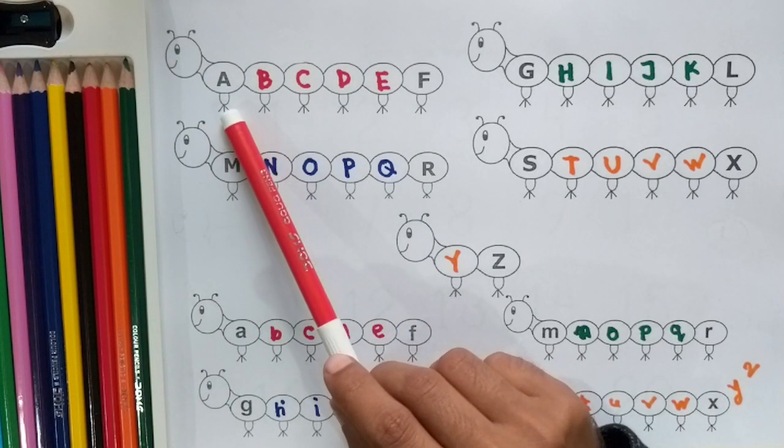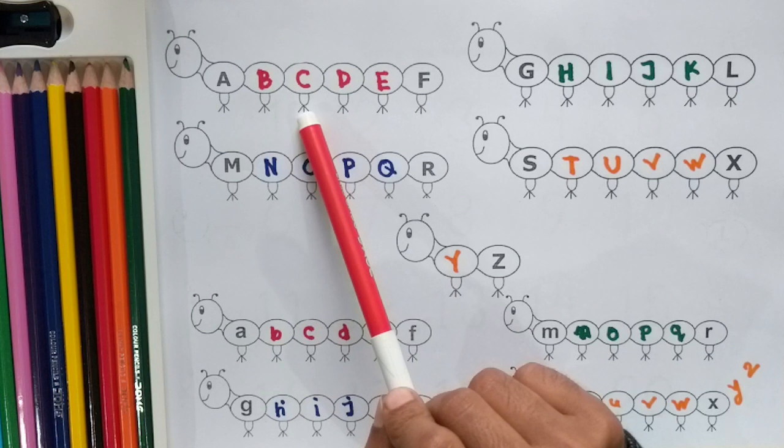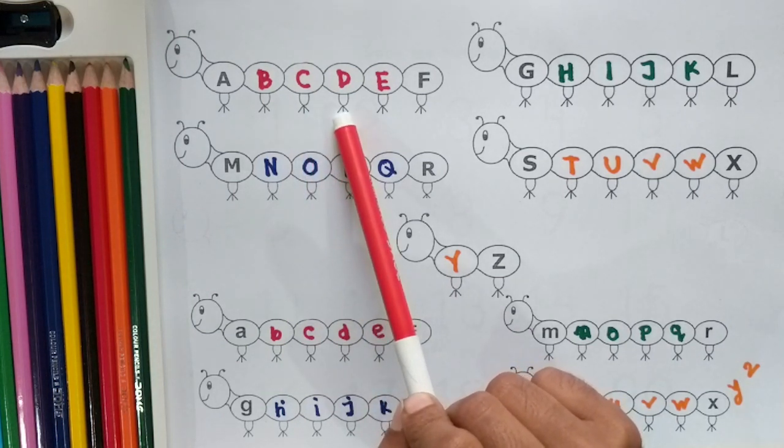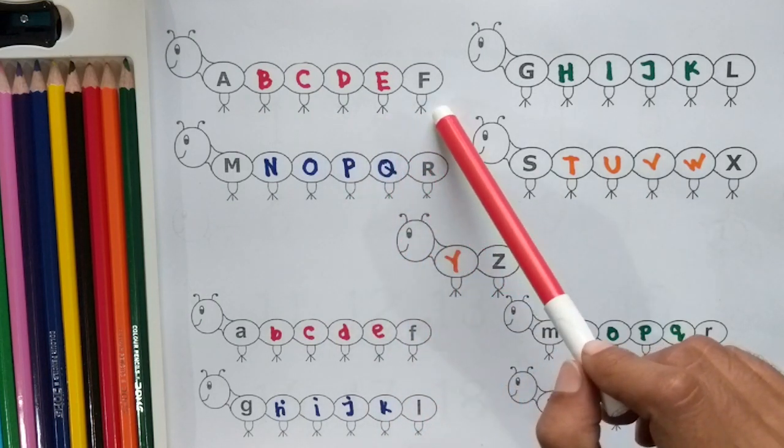A. A for apple. B. B for ball. C. C for cat. D. D for dog. E. E for elephant.